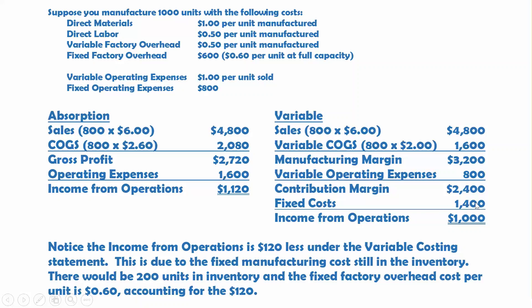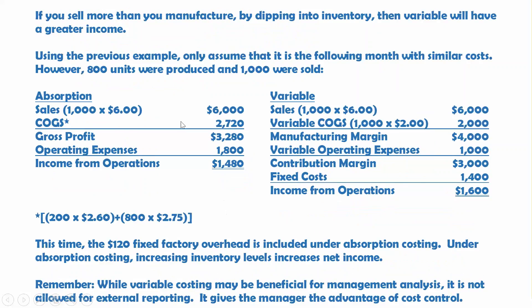If you actually sell more than you manufacture by dipping into inventory, then variable is going to have a greater income than absorption. Using the previous example, assume it's the following month with similar costs. This time we only produced 800 units but sold 1,000. Sales are $1,000 times $6, or $6,000. Under absorption, the first 200 units sold from inventory are at $2.60, but the 800 units produced this month cost $2.75 per unit because we only produced 800, so the fixed cost per unit is higher.